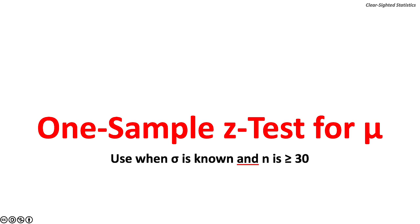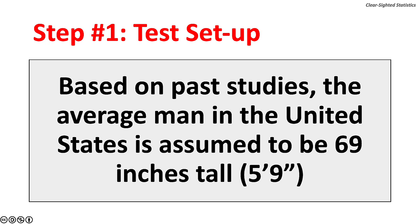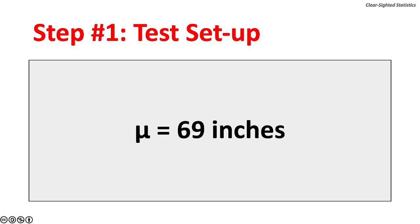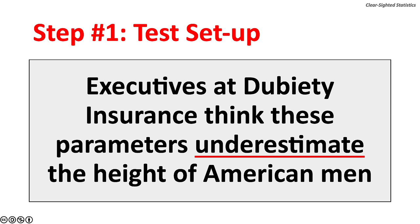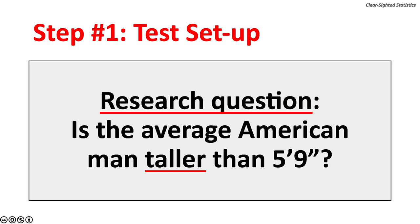The one-sample z-test for the population mean is used when the population standard deviation is known and the sample size is greater than or equal to 30. Both conditions must be met. Step 1: Test Setup. Based on past studies, the average man in the United States is assumed to be 69 inches tall (5 foot 9). The population mean mu is assumed to be 69 inches and the population standard deviation sigma is presumed to be 3 inches. Executives at Dubity Insurance think these parameters underestimate the height of American men — they think the average American man is taller than 69 inches. The research question: Is the average American man taller than 5 feet 9? To understand null hypothesis significance testing, you must have a clear idea of the research question, which is typically expressed in the alternate hypothesis.